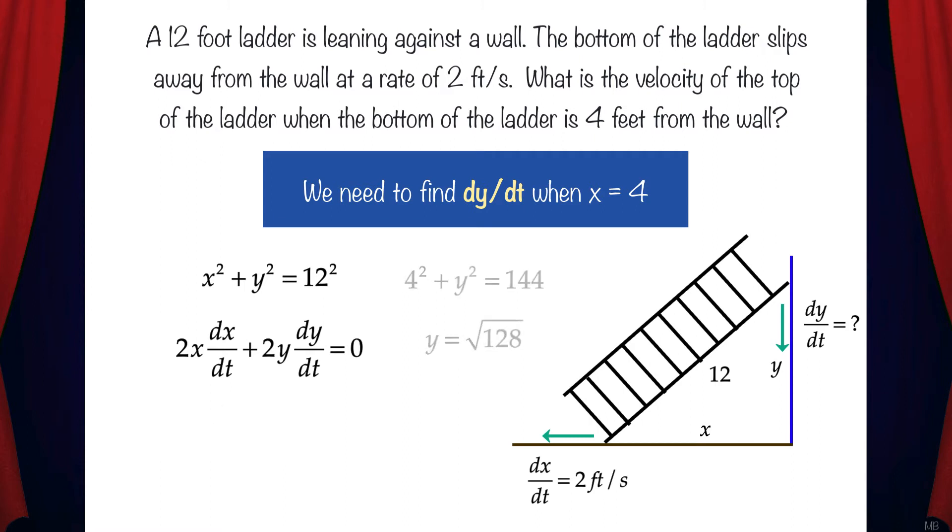Now we'll completely solve for dy/dt and this is negative 4 times 2 divided by the square root of 128 and the decimal approximation is negative 0.707 feet per second. Note that the sign is negative because the top of the ladder is falling down in the negative direction.